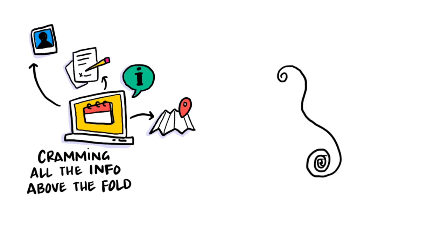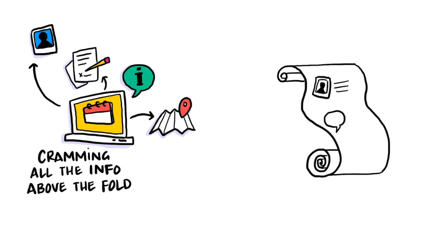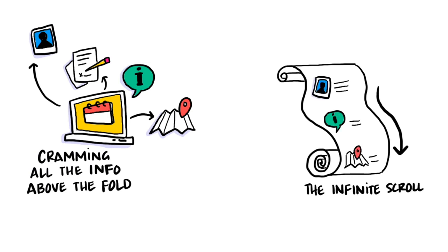Or number two, you have what we call the infinite scroll, where as I start scrolling down the page, I'm learning a little bit about your event — scroll a little longer and I see your location, scroll a little longer and I see the speakers. That's no good either.